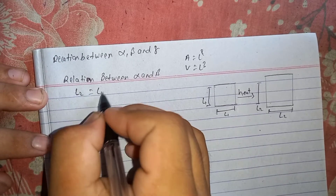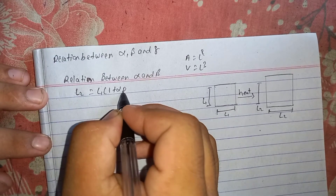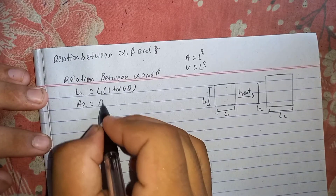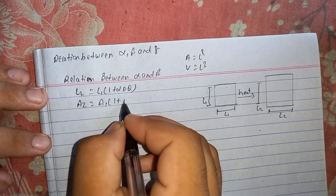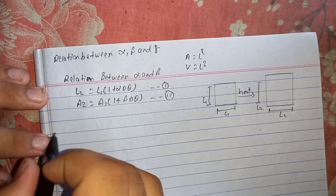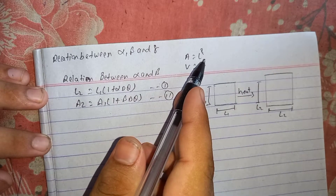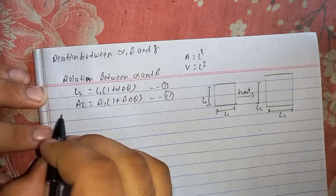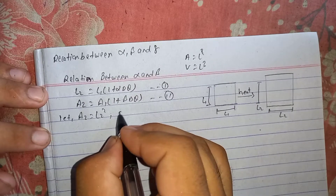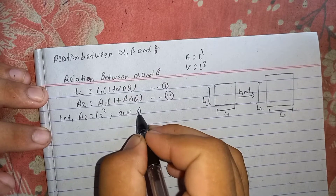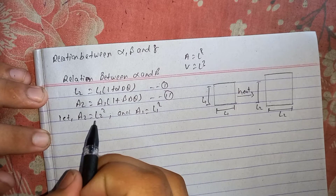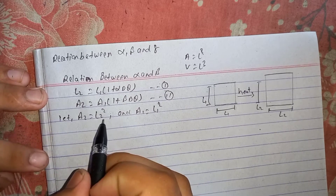l2 is equal to l1 times 1 plus alpha del theta — equation 1. Superficial expansion: a2 is equal to a1 times 1 plus beta del theta — equation 2. Area is equal to l squared.